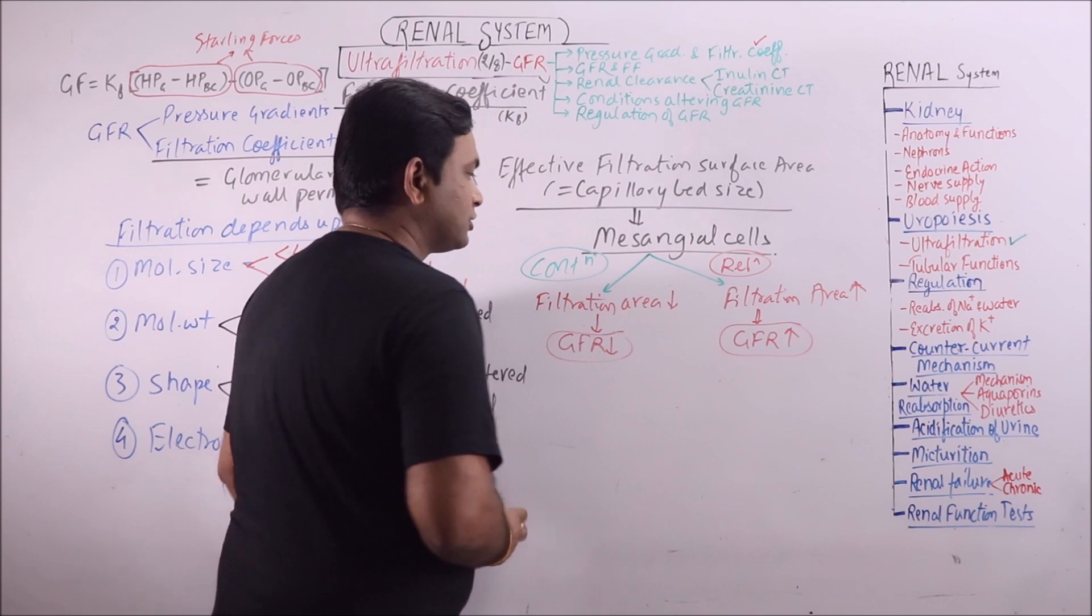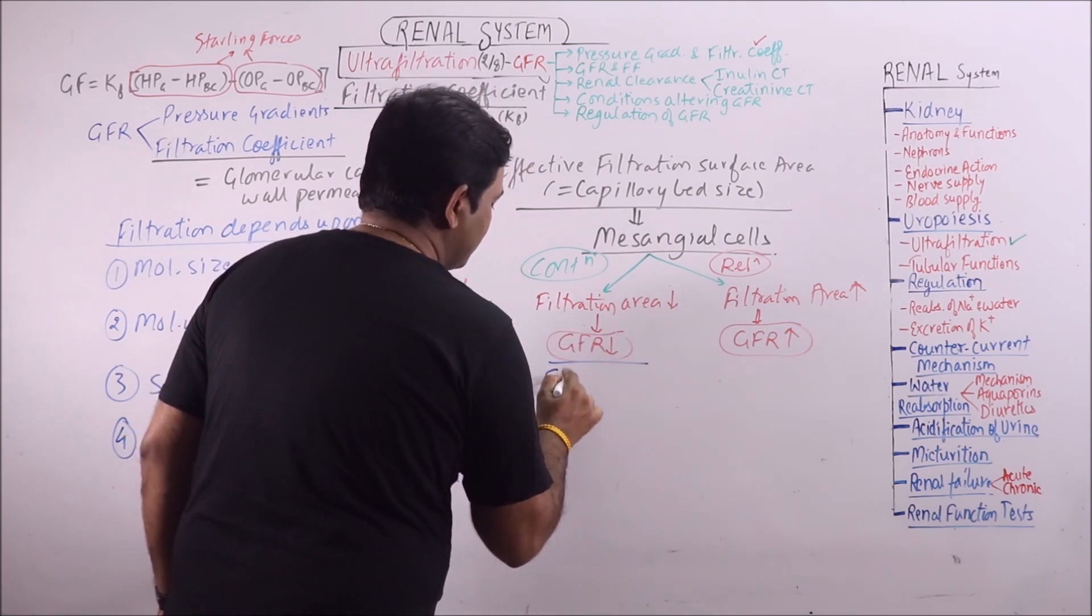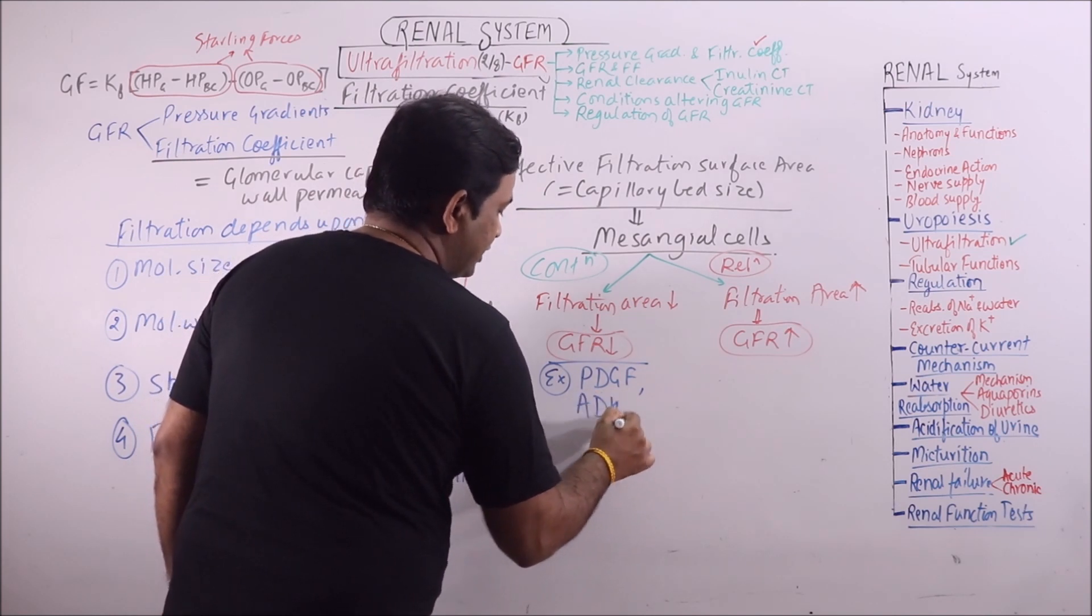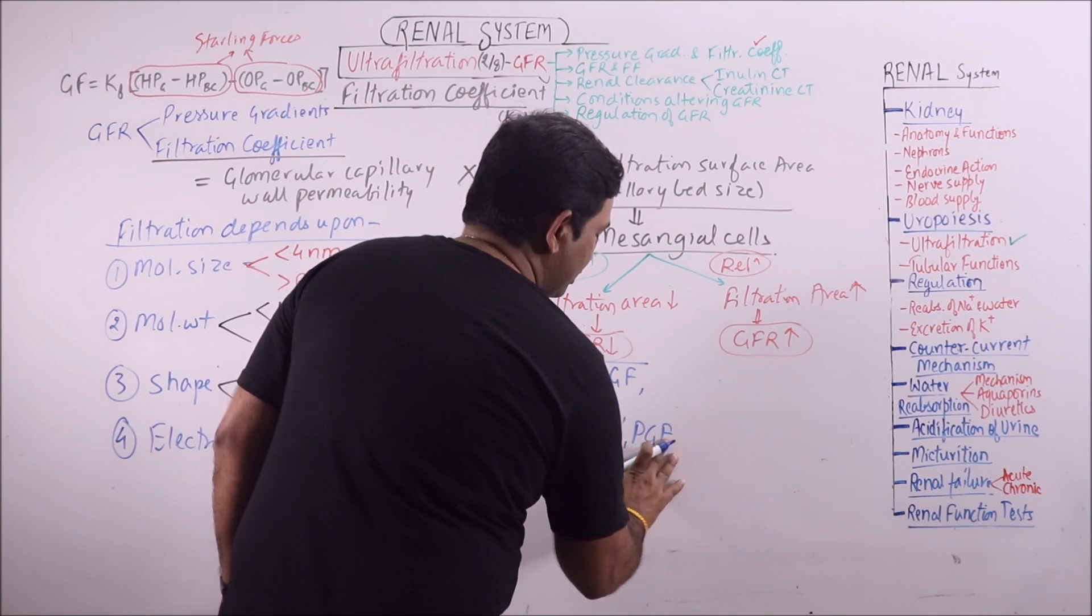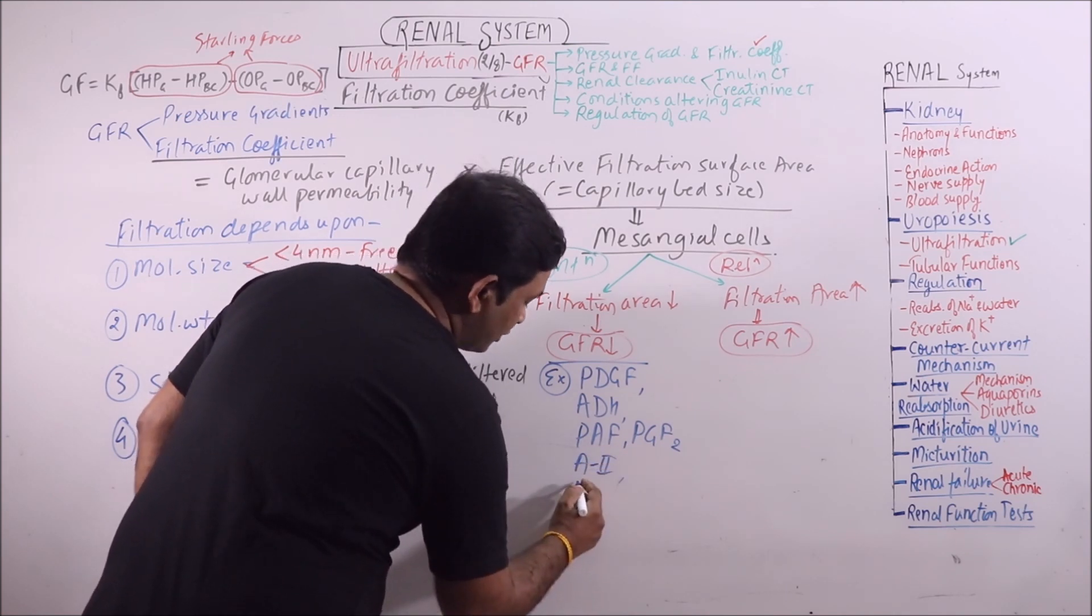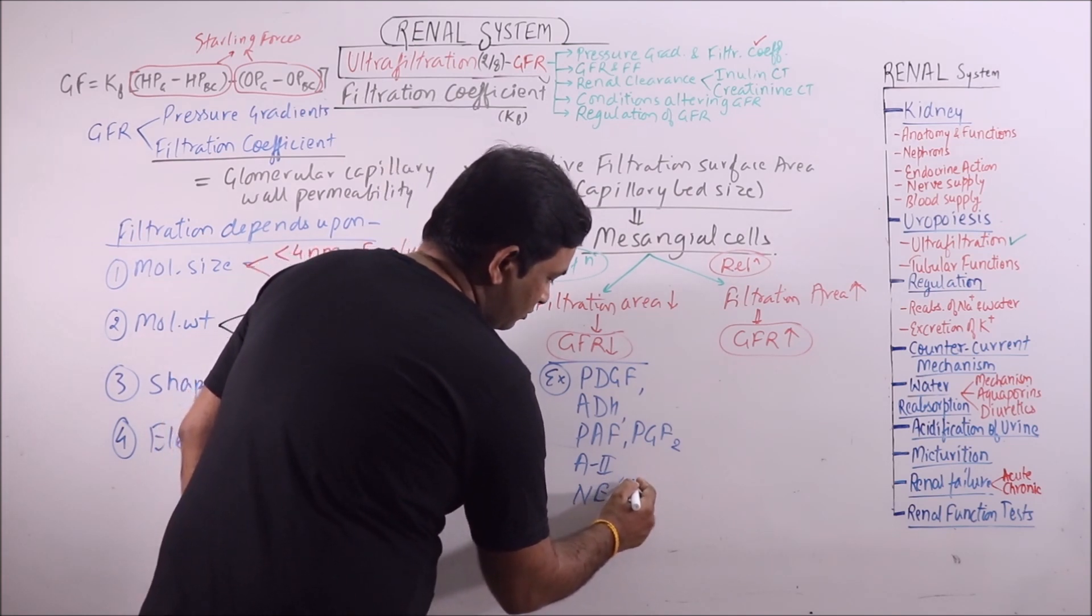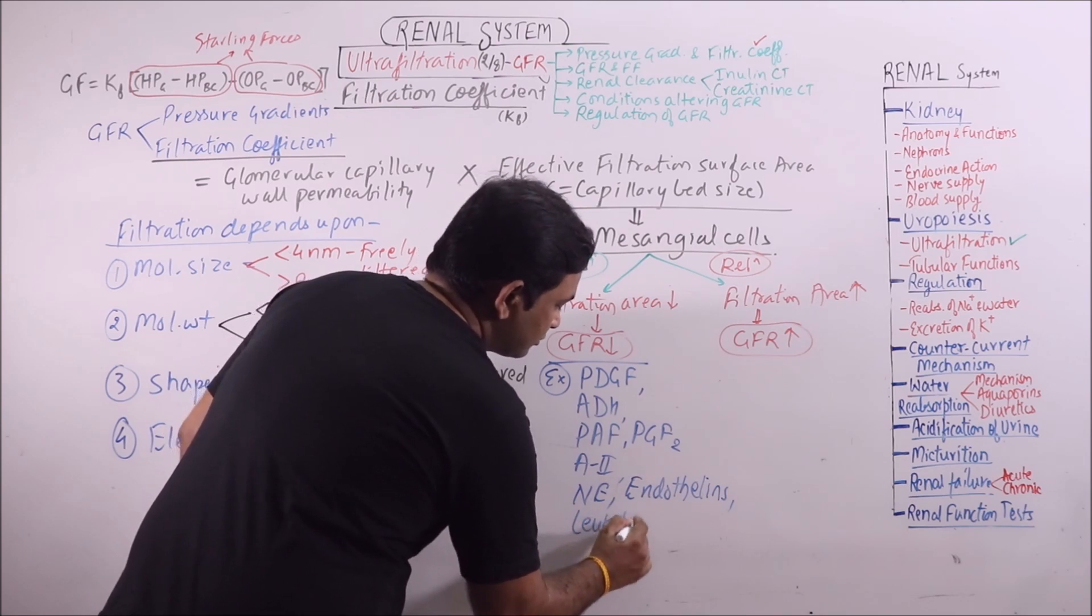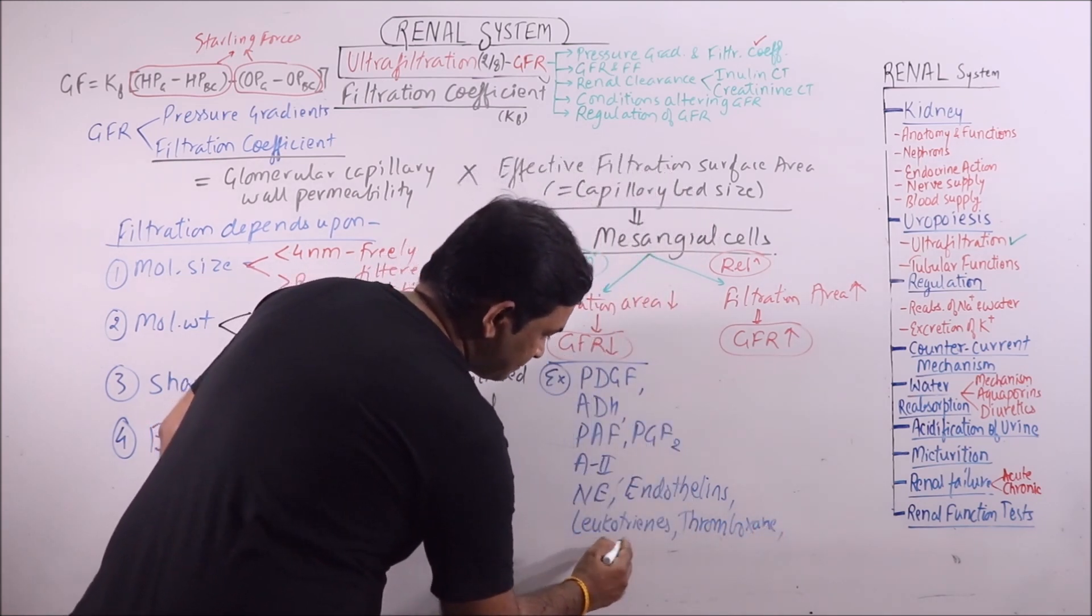So those substances which result in contraction of mesangial cells and finally reduce the GFR are platelet-derived growth factor, ADH, then platelet activation factor, then prostaglandin F, PGF2 alpha, then angiotensin 2, thereafter norepinephrine, endothelins, leukotrienes, thromboxane, and histamine.